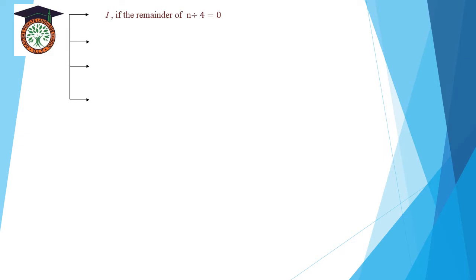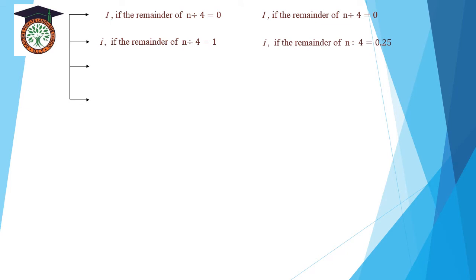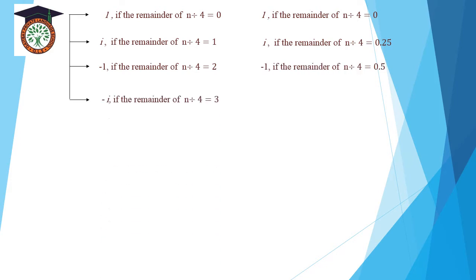If the remainder of n divided by 4 equals 0, then iⁿ equals 1. If the remainder equals 1, then iⁿ equals i. If the remainder equals 2, then iⁿ equals negative 1. If the remainder equals 3, then iⁿ equals negative i.